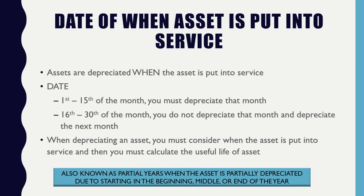For instance, if you buy a machine on December 28th, you only used it for three days — less than 50% of the month. So you don't depreciate it for December. You would push it off and start depreciating as of January 1st. This matters because depreciation is an adjustment entry made at the end of the accounting period — usually the end of the year, though you can do it monthly.